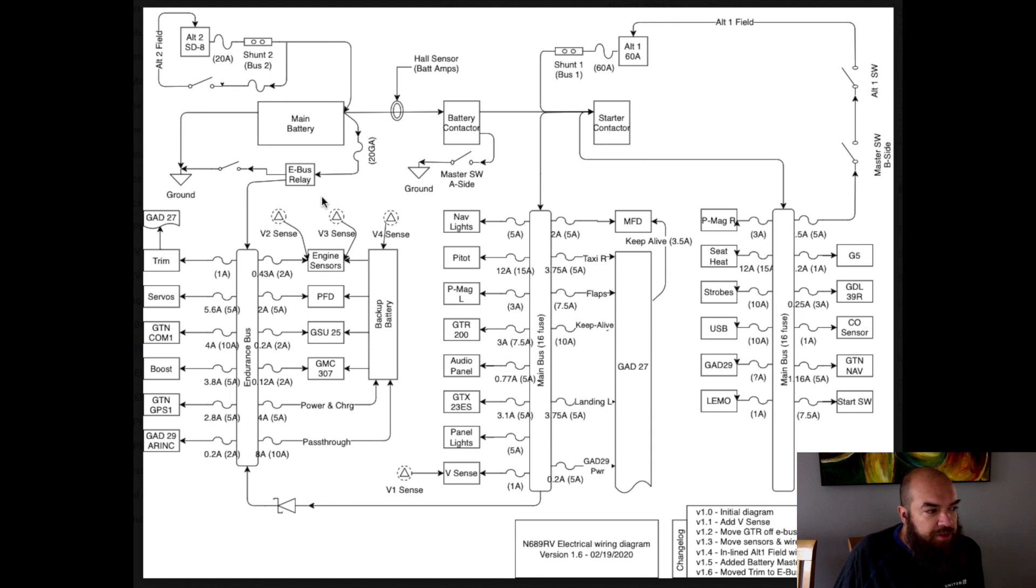Additionally, the main bus and the endurance bus are tied through a diode. So this bus will receive power if the battery contactor is on, but it won't feed power this way. There's an e-bus relay over here so that I can turn on the endurance bus without having to turn on the battery contactor. So there's a switch - it's one of the three switches you may have noticed. I have master, IBBS, and e-bus. So master, of course, turns on the battery contactor. IBBS turns on the backup battery over here, and e-bus turns on this relay over here.